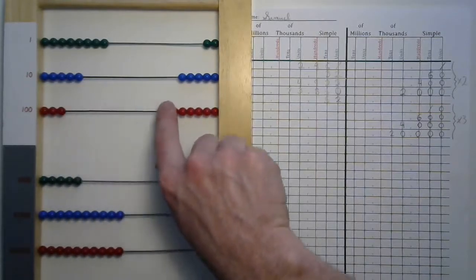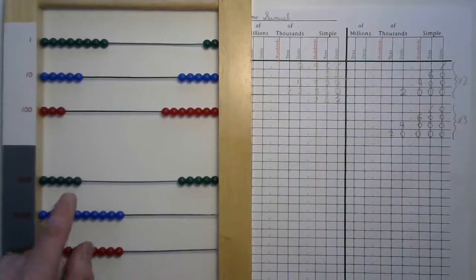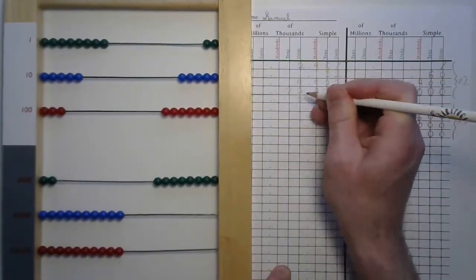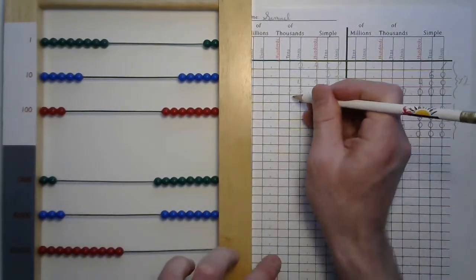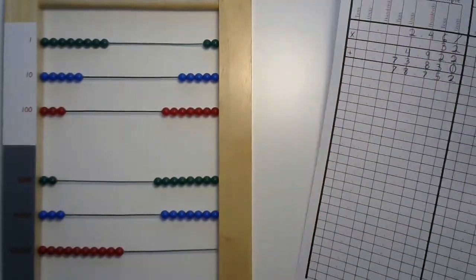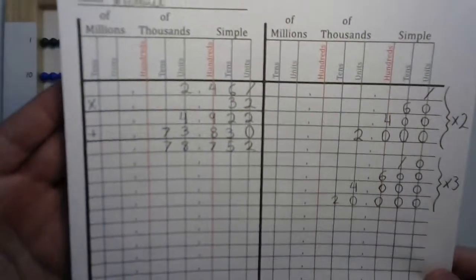There's seven to put in our hundreds. We're adding three to our thousands. Eight. And there's nothing else to add on the bottom except for those 70,000s. And so now we can see our final answer from this long multiplication is 78,752.